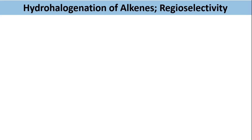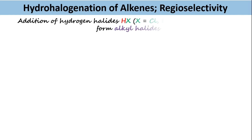In this lecture, we will discuss Markovnikov's rule, which forms the basis of regioselectivity in the hydrohalogenation reaction of alkenes. Hydrohalogenation can be defined as the addition of hydrogen halide to alkenes to form an alkyl halide.